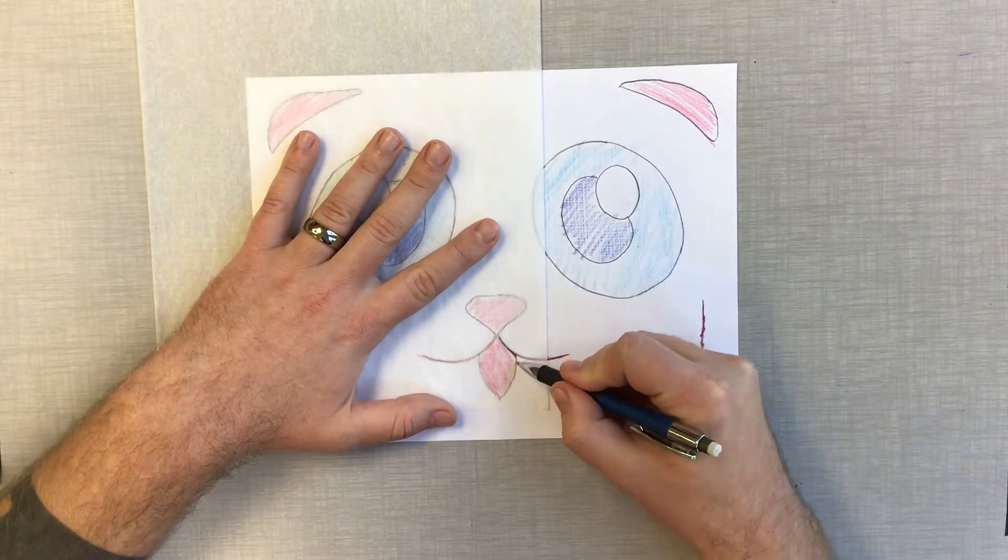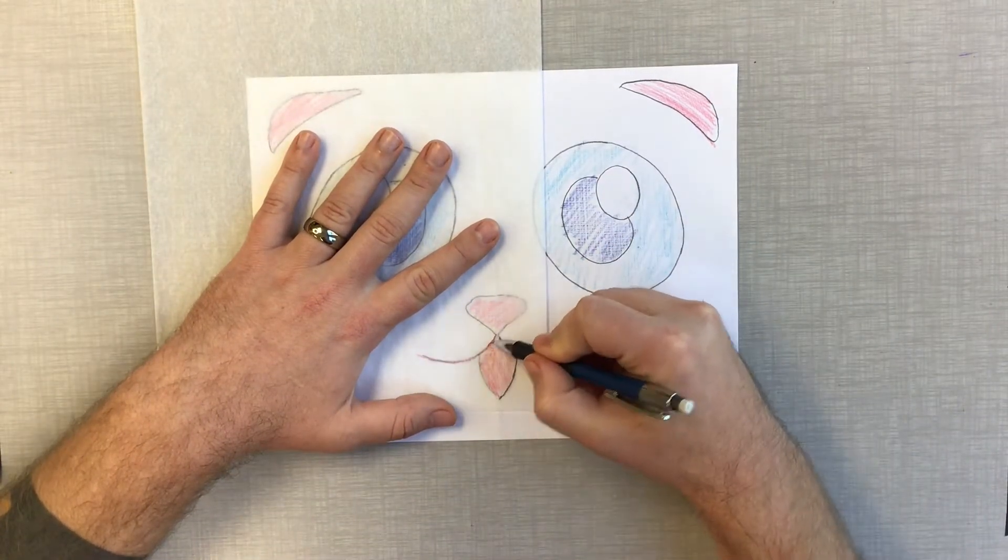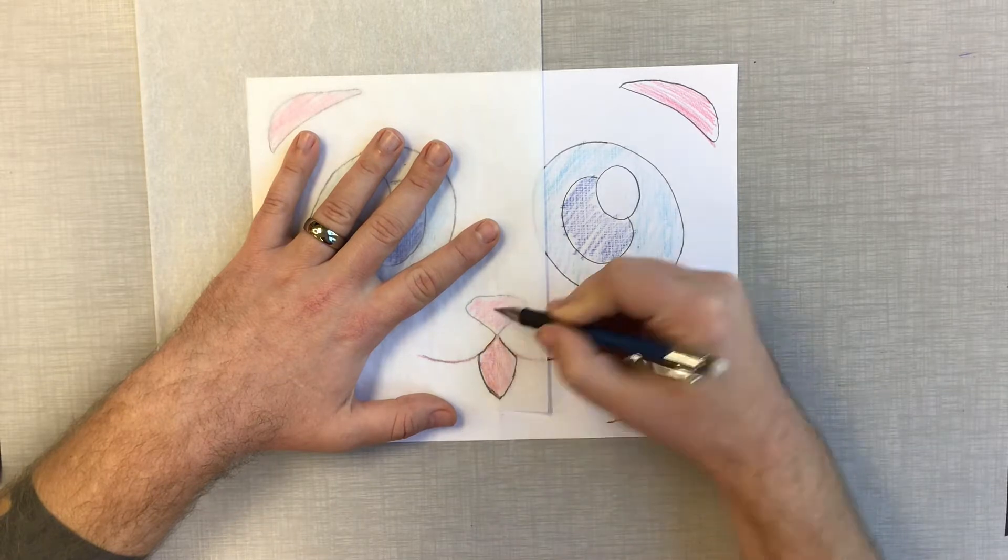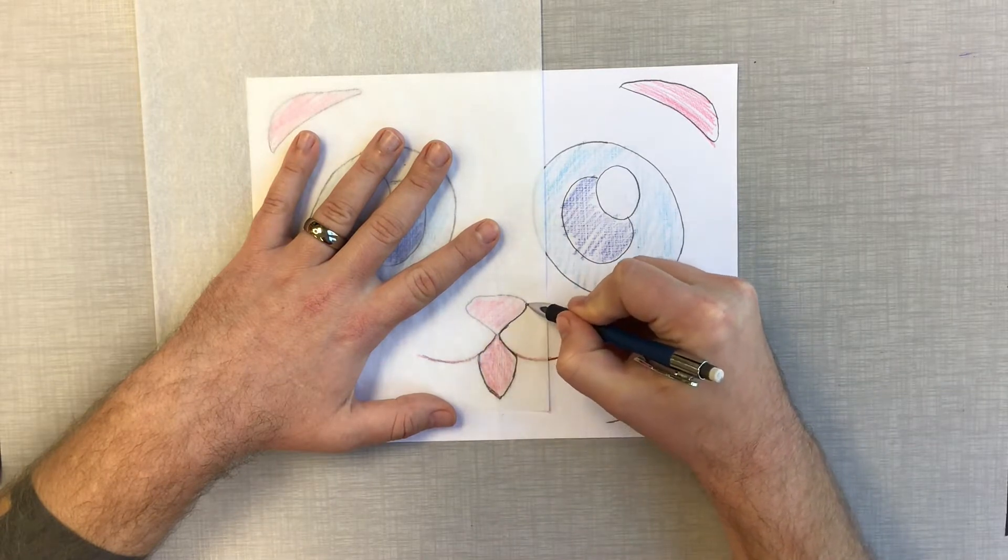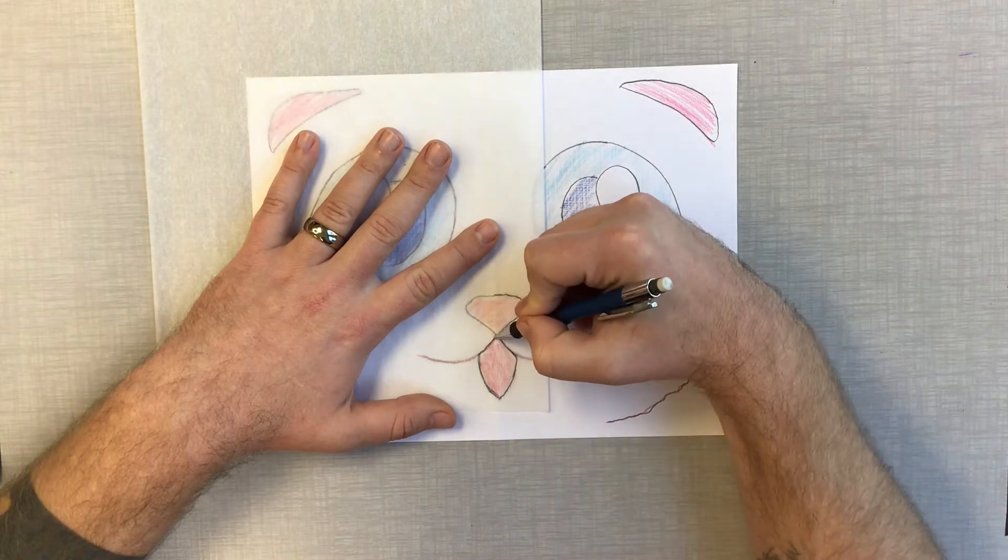Once you're done with that, it comes to the tracing paper part. Now this is really important. Whenever you outline your shapes, because remember this whole thing is based off of shapes, it needs to be separate.